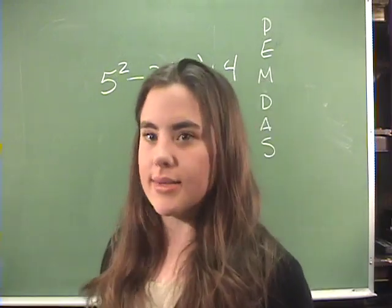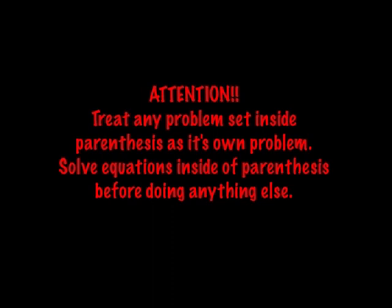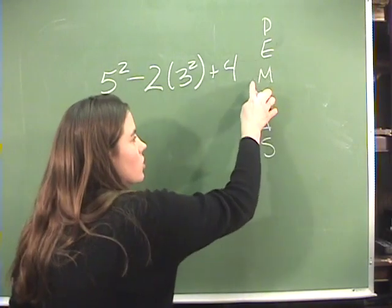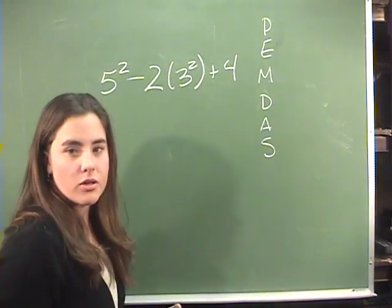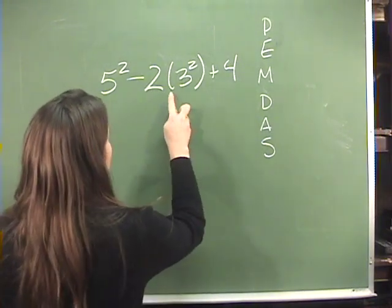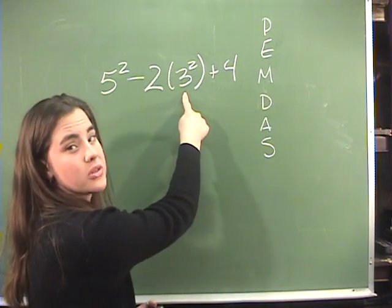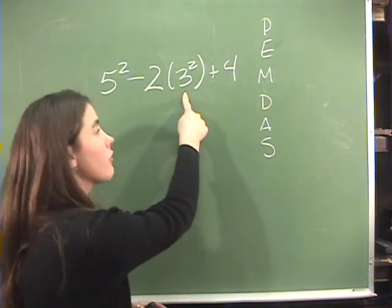Let's take a look at our Aunt Sally. Please excuse my dear Aunt Sally. Well, parentheses come first. Do I have parentheses? Yes, around the three squared. So I need to do that first.